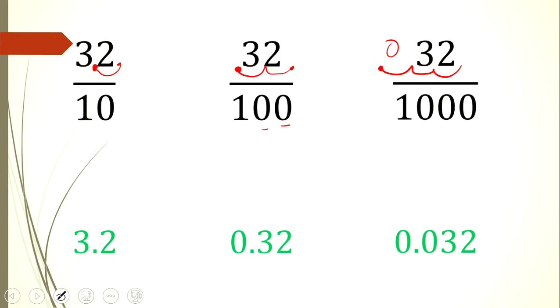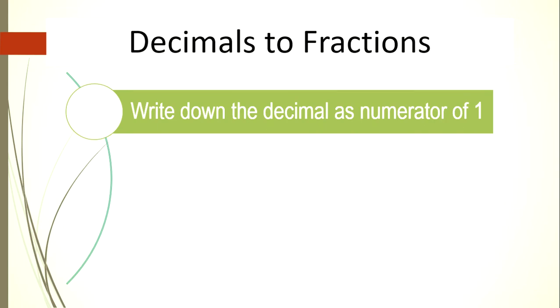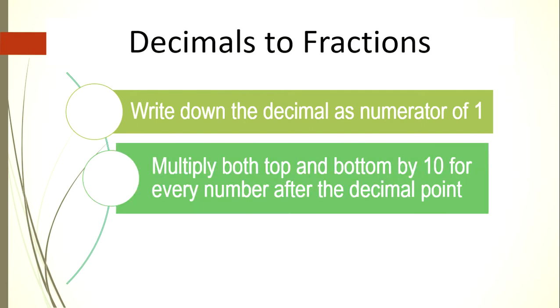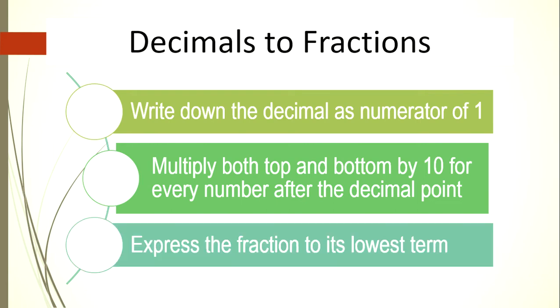Now, how do we convert decimals to fractions? First, write down the decimal as the numerator over 1. Then multiply both top and bottom by 10 for every number after the decimal point. Lastly, express the fraction to its lowest term.